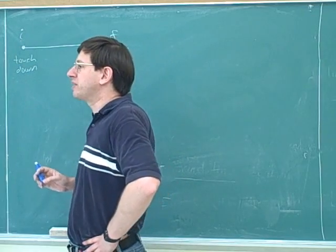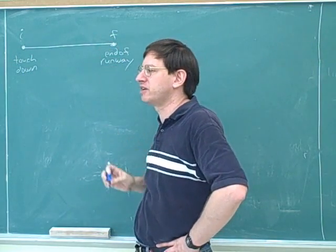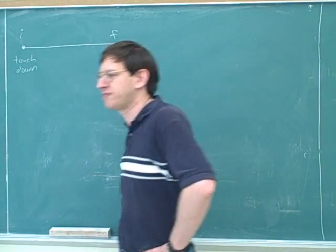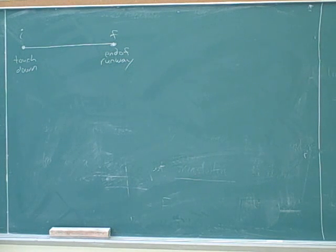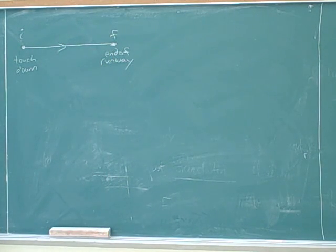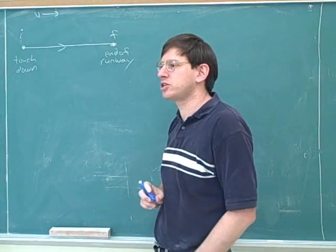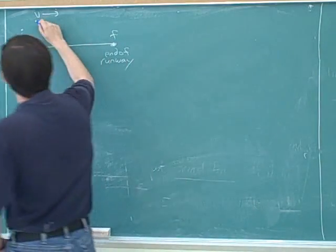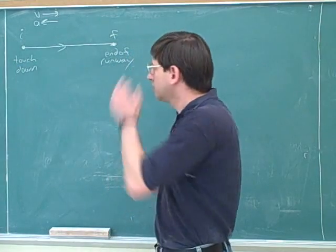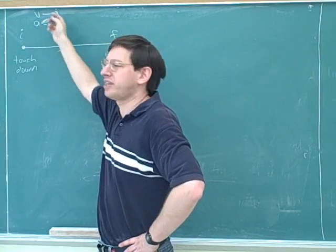We're treating this as the initial point and this as the final point. When we say this is the initial point, we don't mean it's the beginning of time — it's just the first convenient point. It's also a really good habit to draw the velocity and acceleration vectors. The velocity vector is to the right because we're moving to the right. The acceleration is to the left because it's decelerating — anti-parallel to the velocity. You have to write the velocity first so you know what the anti-parallel direction is.